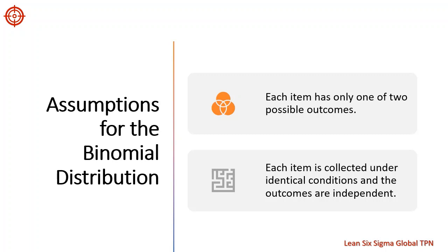To draw p and np charts we need to meet two assumptions, because these charts are used to monitor binomial data. The binomial distribution is associated with data that can have only one of two values, such as satisfied or dissatisfied. Each item is collected under identical conditions and the outcomes are independent.